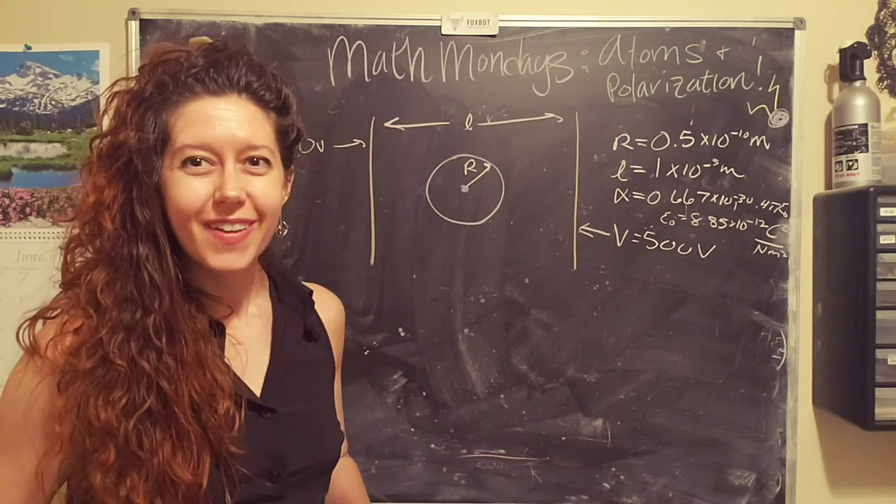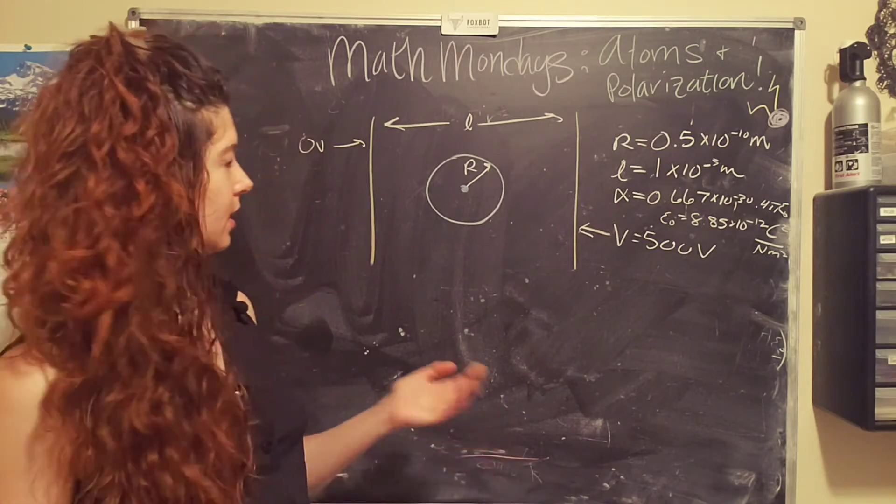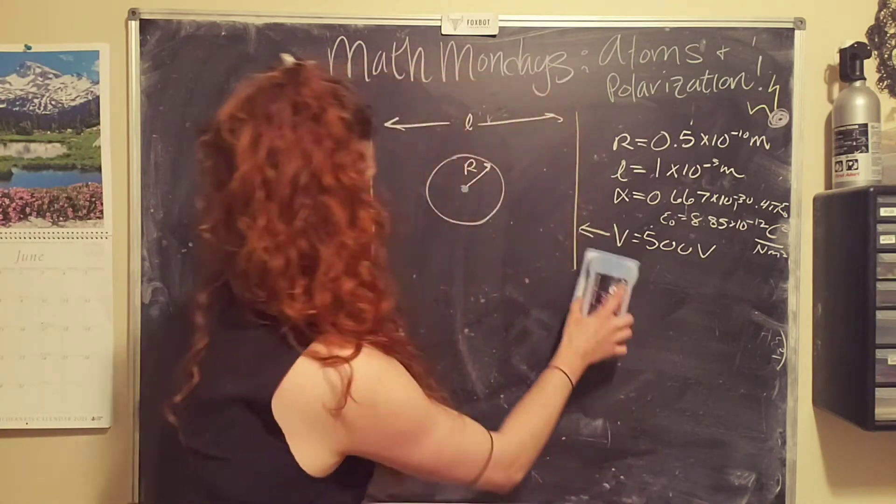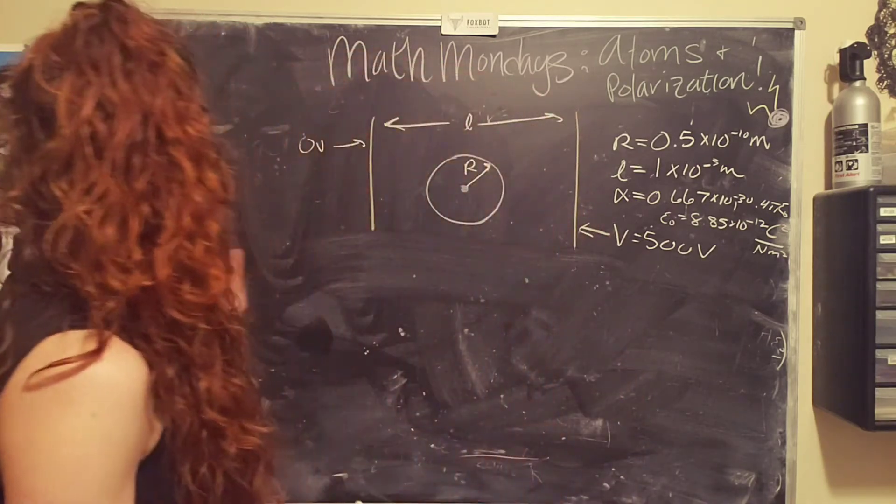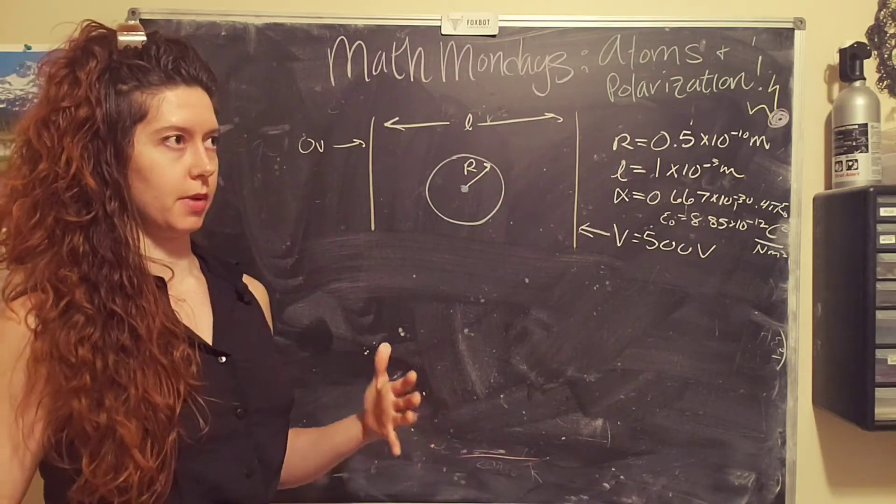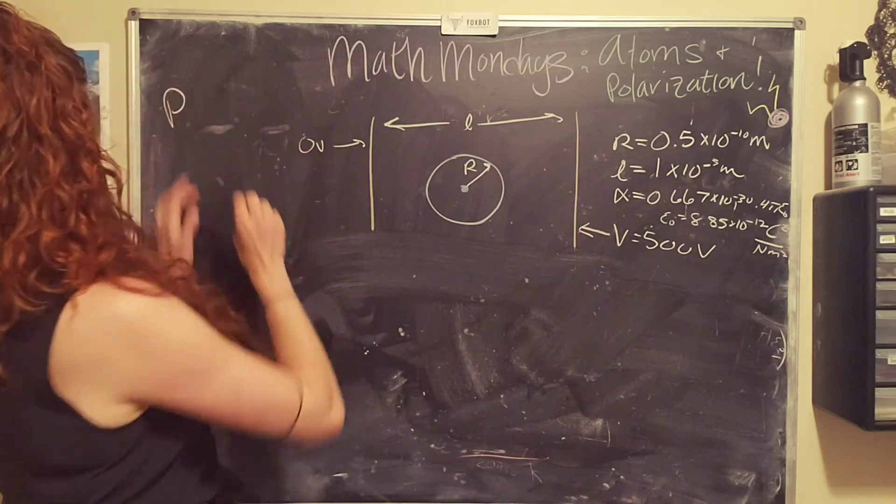So we actually have all the pieces of information that we need for our equations. We're going to use the atomic dipole momentum, or p.